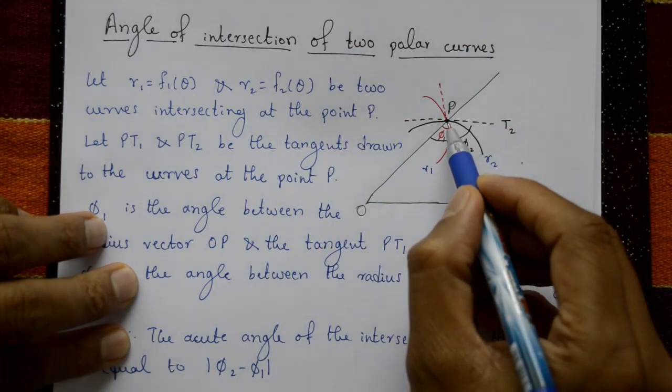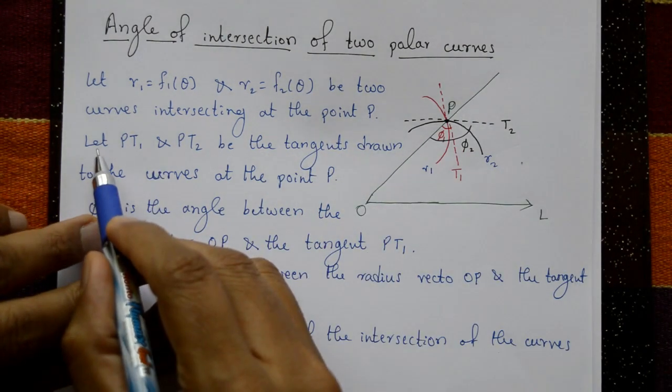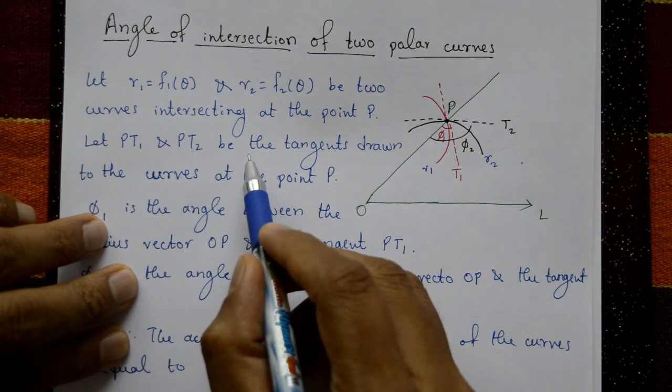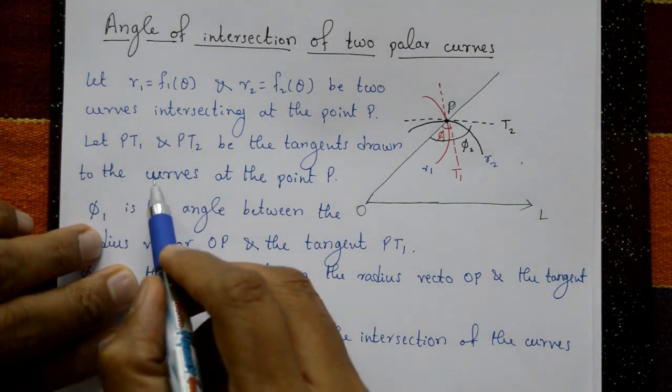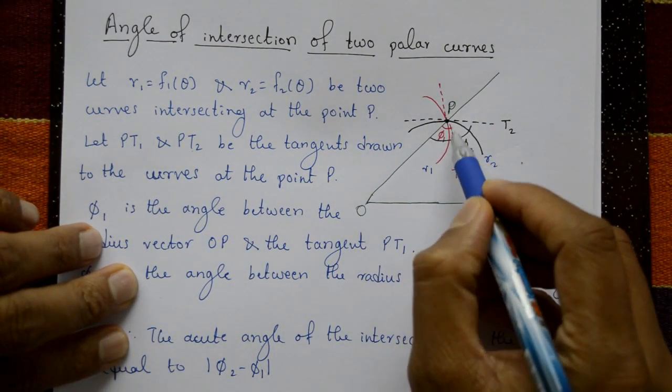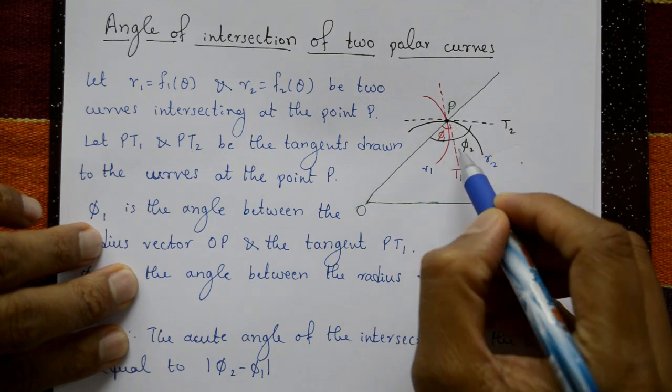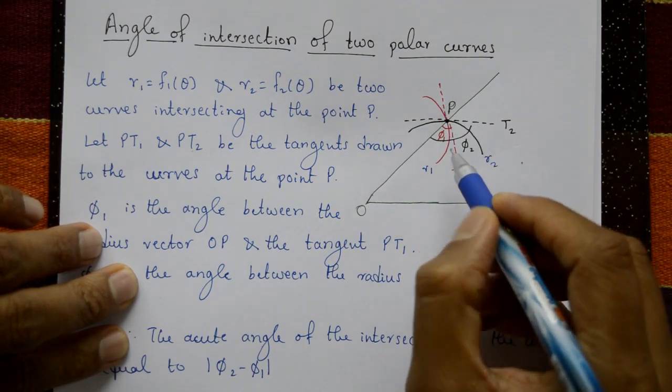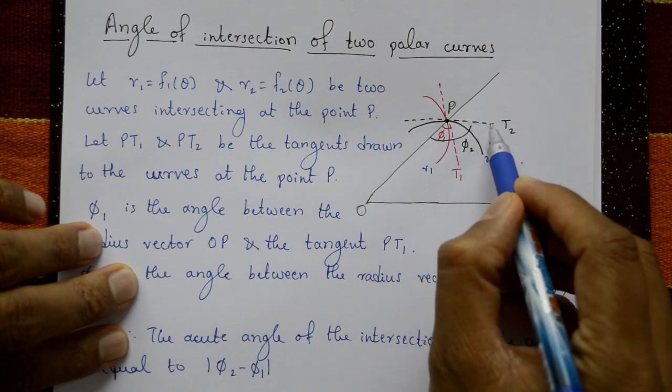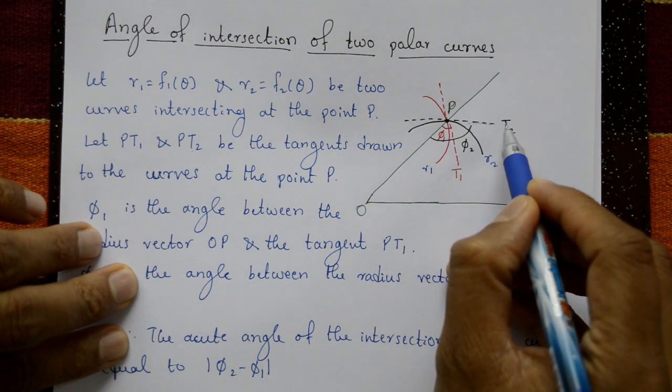Let PT1 and PT2 be the tangents drawn to the curves at the point P. The first curve has tangent PT1, and the second curve has tangent PT2.